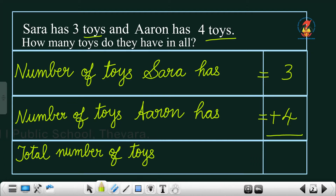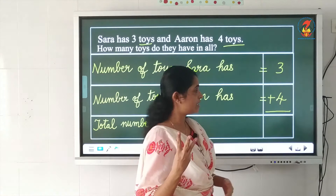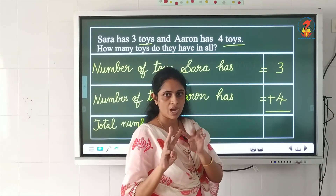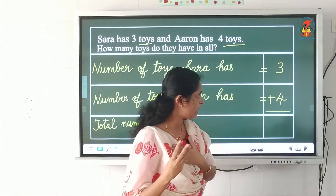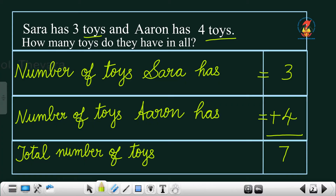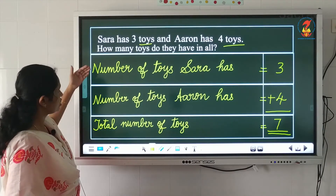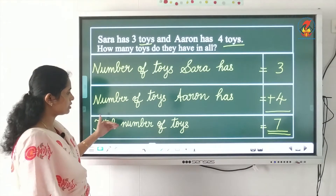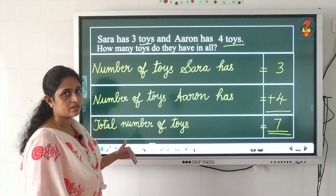Put the plus symbol and now add 3 and 4. The smaller number is 3 and the bigger number is 4, so 4 in your mind and 3 in your fingers. Count after 4: 5, 6, 7. The answer is 7. Underline your answer. Remember: the first and second statements start with 'number of', and the last statement starts with 'total number of'. The remaining parts are written according to the question.